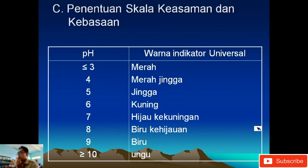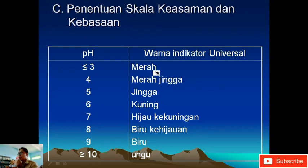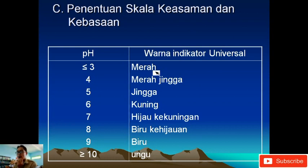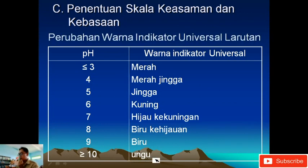Penentuan pH: skala keasaman dan kebasaan antara 0 sampai 14. Patokannya: pH netral adalah 7. Kalau kurang dari 7 maka dia asam, kalau lebih dari 7 maka dia basa. Pada indikator universal: pH 4 berwarna merah-jingga, pH 5 jingga, pH 6 kuning, pH 7 hijau kekuningan, pH 8 biru-hijau, pH 9 berwarna biru, lebih dari 10 berwarna ungu. Ini adalah perubahan warna indikator universal pada larutan.